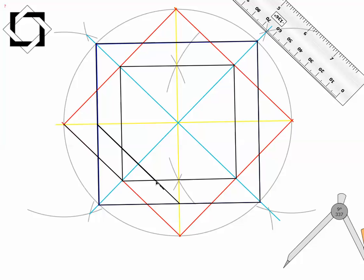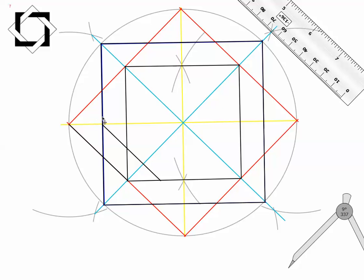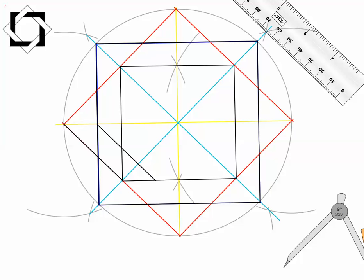I'm going to redraw this line and erase that right there. Then I'm going to go through all the way to this point, and again all the way to this point. But it is going to go underneath my blue square here, and then it's going to pick back up on the outside all the way here. Then this point of intersection gets connected to this point of intersection.